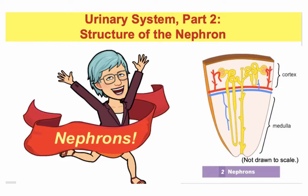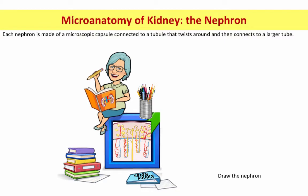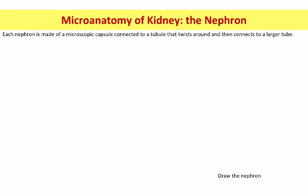Okay folks, here we go. Microanatomy of the urinary system, which means for us, the nephron. I am going to ask you guys to draw along with me. I know I'm not there in person to sort of lovingly bully you into doing it, but since I started having students draw the nephron along with me, the test scores really improved on this. So please do it with me.